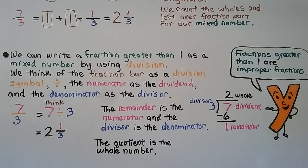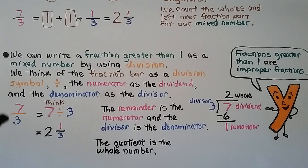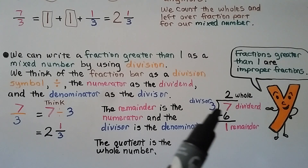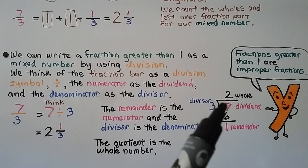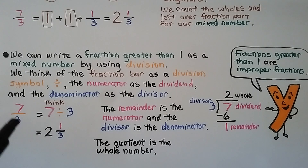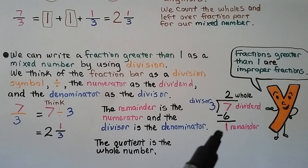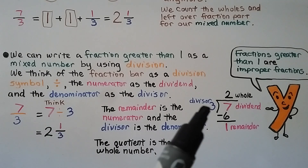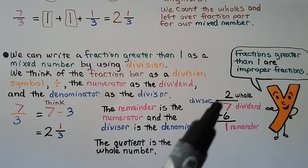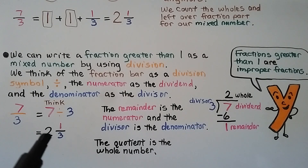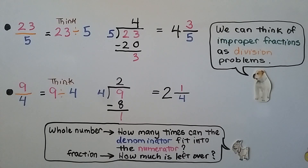We can write a fraction greater than one as a mixed number by using division, thinking of the fraction bar as the division symbol. The numerator is the dividend and the denominator is the divisor. For seven thirds, we think seven divided by three: how many times can three fit into seven? Three times two is six, so the quotient is two with a remainder of one. The remainder becomes the numerator, the divisor becomes the denominator, and the quotient is the whole number — giving us two and one third.